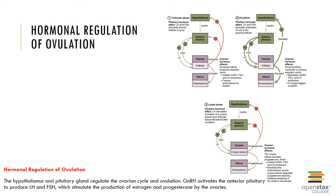After ovulation, the ruptured follicle collapses and the antrum fills with clotted blood, forming the corpus luteum, which begins to secrete progesterone and estrogen. If fertilization does not occur, the corpus luteum continues to degenerate to form the corpus albicans, or scar tissue.